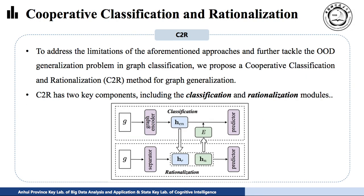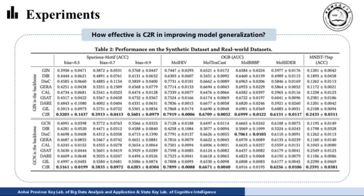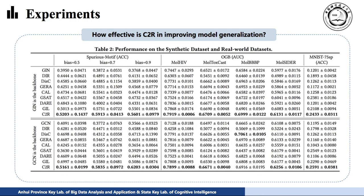To address the limitations of the above methods and further tackle the OOD problem in graph classification, we propose a Cooperative Classification and Rationalization method for graph generalization, C2R. C2R has two key modules including classification and rationalization models. They are trained cooperatively to solve the graph generalization problem. From the table, we can observe that C2R performs better than all baselines, which shows the effectiveness of C2R.